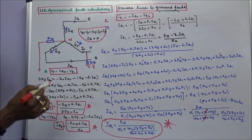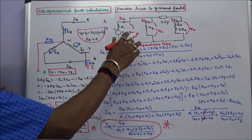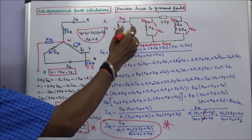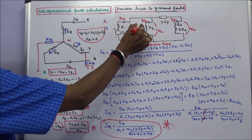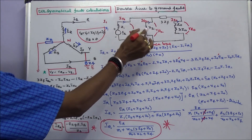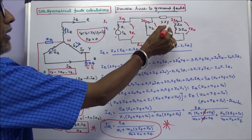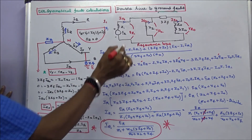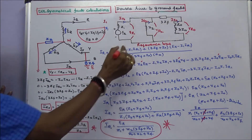Now IR0, IR1, and IR2 are all known, so the fault current can be easily calculated. The sequence network of the double line to ground fault shows IR1, IR2, IR0 with impedances Z1, Z2, Z0, 3Zn, and 3Zf. The sequence voltages Vr1, Vr2, Vr0 are labeled with respect to the reference bus.